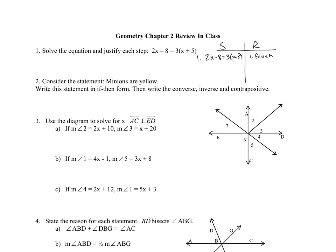Next step. There could be a couple different things you can do, but most of you are going to do a distributive step here. So this will be 3x plus 15. And this is the distributive property. That's what we did — we applied the distributive property.